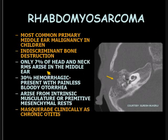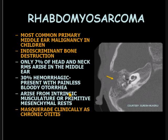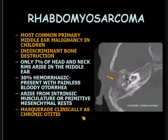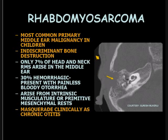Only 7% of head and neck rhabdomyosarcomas arise in the middle ear. 30% are hemorrhagic and associated with painless bloody otorrhea. They arise either from intrinsic musculature or from primitive mesenchymal rests, and they masquerade clinically as chronic otitis. Most of these cases are carried along for a period of time as chronic otitis before they are studied.